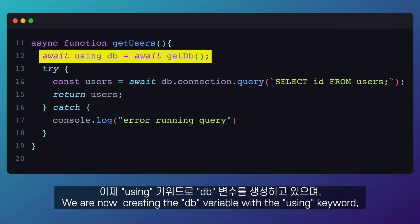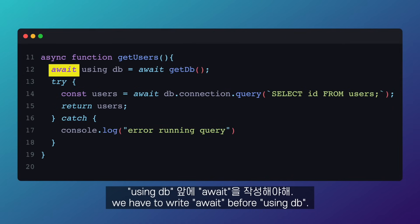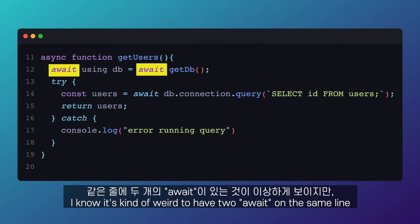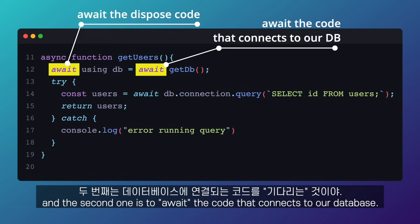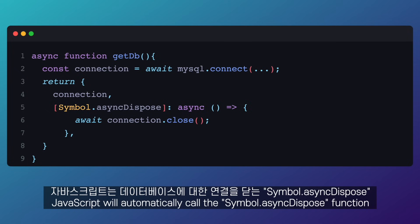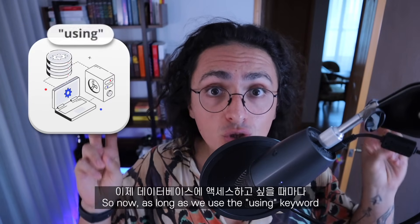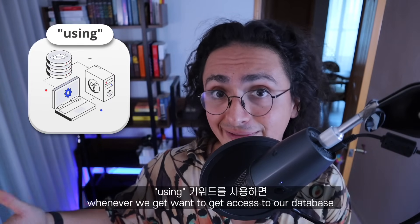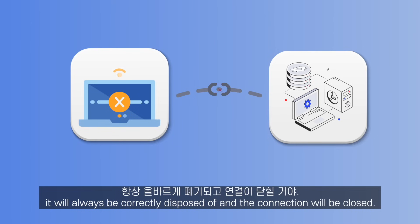Now we can change the `getUsers` function to look like this. We create the `db` variable with the `using` keyword, and because we are using `Symbol.asyncDispose`, we have to write `await` before `using db`. The first `await` is to await the dispose code, and the second one is to await the code that connects to our database. After those changes, the moment the `getUsers` function ends, JavaScript will automatically call the `Symbol.asyncDispose` function we wrote, which closes the connection to our database. So now, as long as we use the `using` keyword whenever we want to access our database, we can be sure that when we are done, it will always be correctly disposed and the connection will be closed.